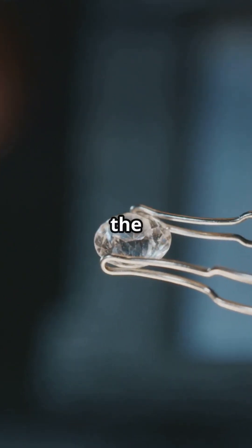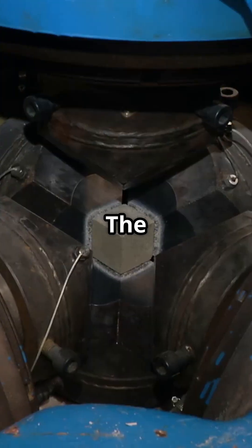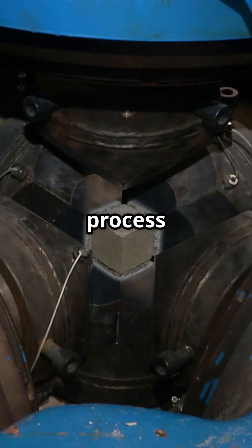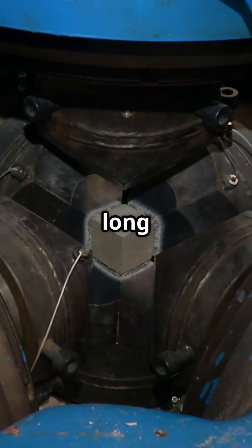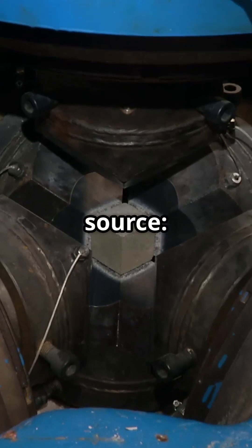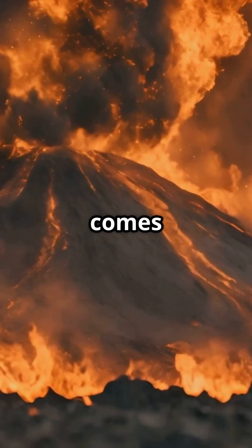Diamonds can be found embedded within the solidified lava in these pipes. The formation of diamonds follows a long and intricate process. The carbon in diamonds mainly comes from two sources.